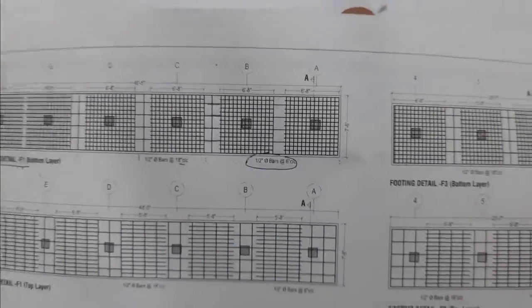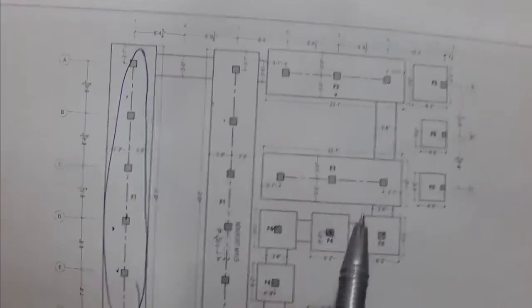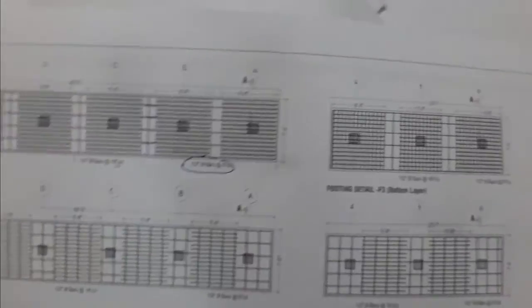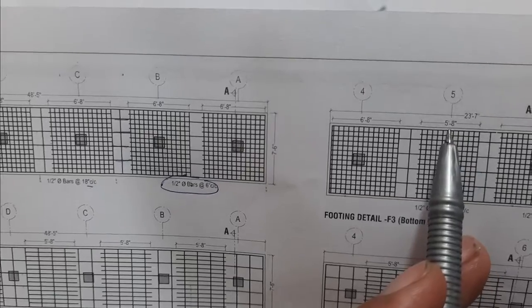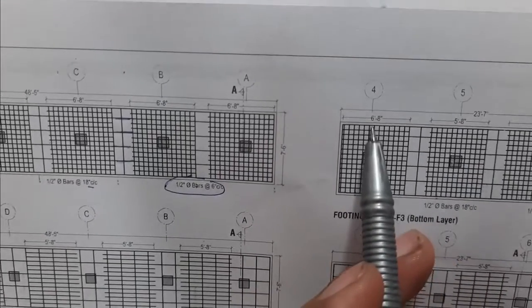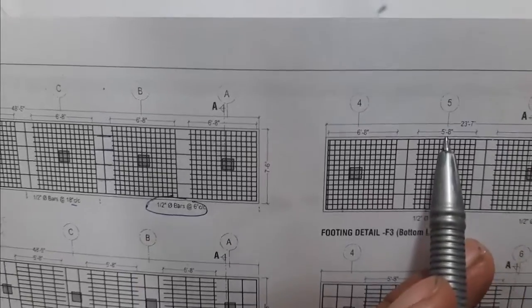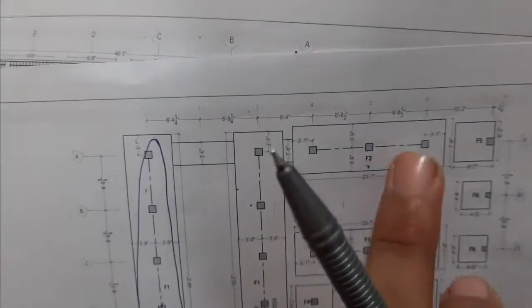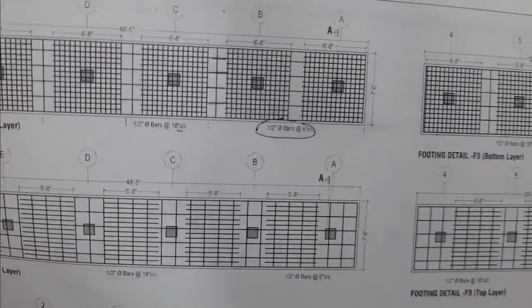This is the footing three detail. You can find footing three here — this is footing three, this is footing three — and you can see the steel reinforcement. Half inch, the size is 5 feet 8 inches; this one is 6 feet 8 inches; and this one is also 6 feet 8 inches. You can see all these things here for the footing details.